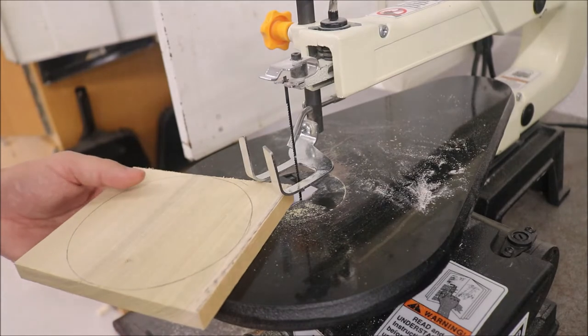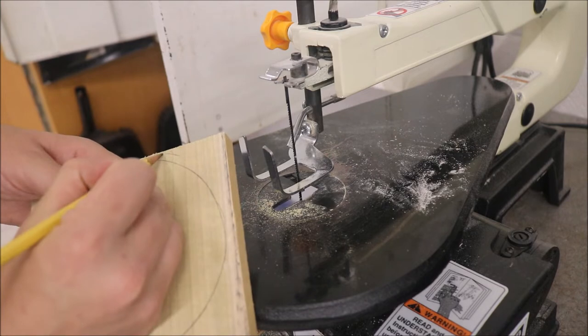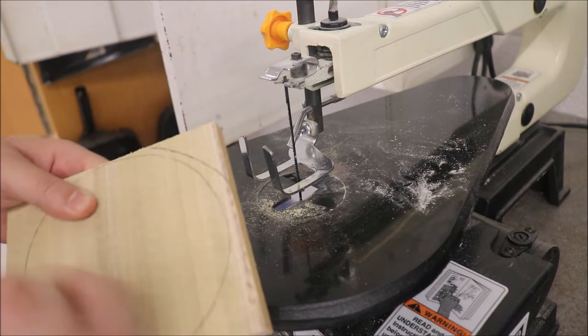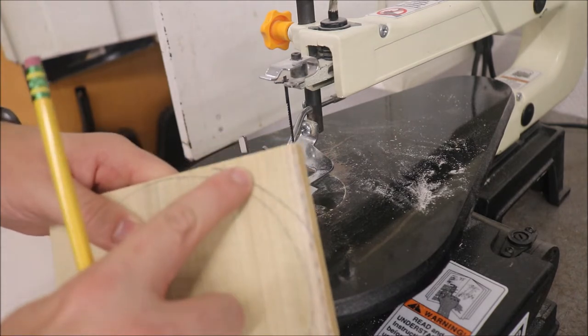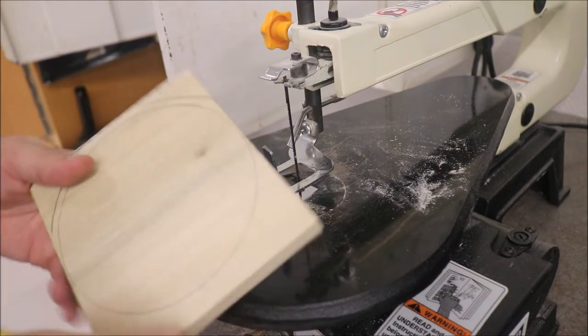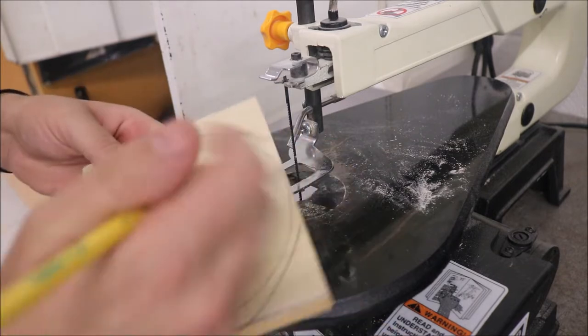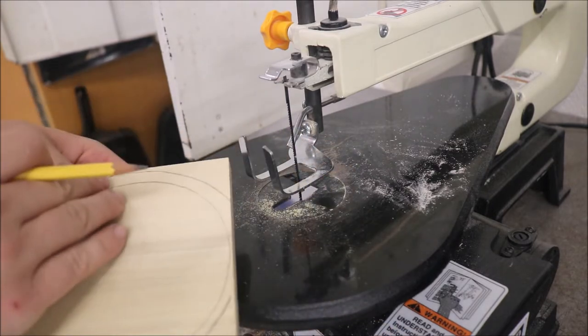Now the next thing we're going to do is stop at the scroll saw and we're going to cut off as much scrap as possible. Now when you're doing this, it's helpful to make a small little scrap line that's a little bit further out from the finish line, and we're going to do that at all the spots around your project. The reason we do this is just because if we make a mistake when we're cutting, we can very easily sand it away later.